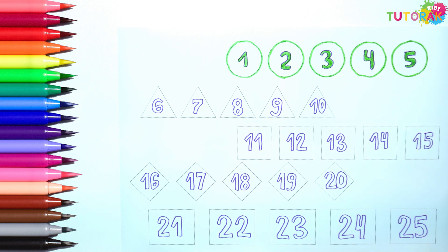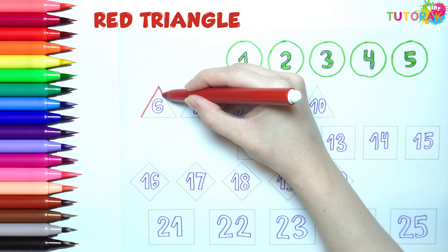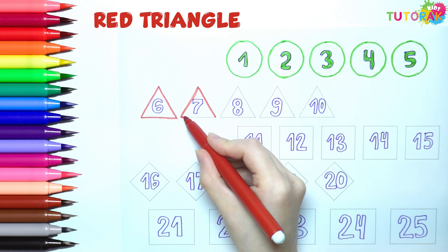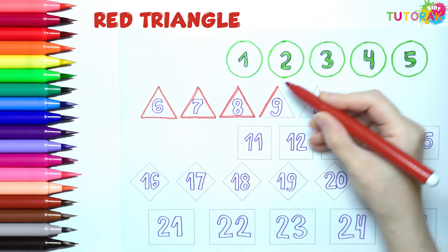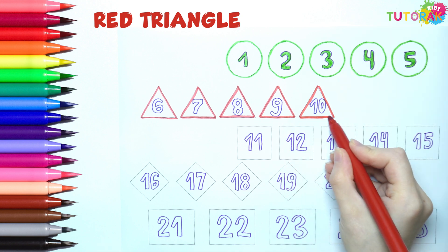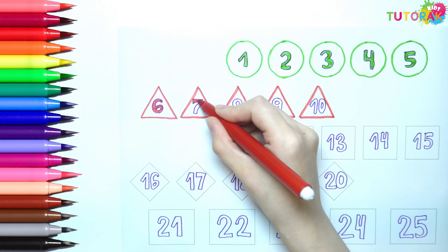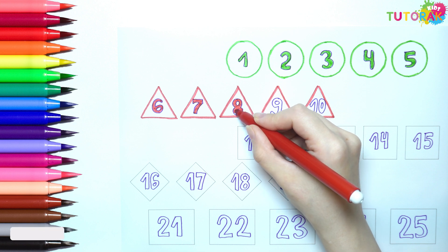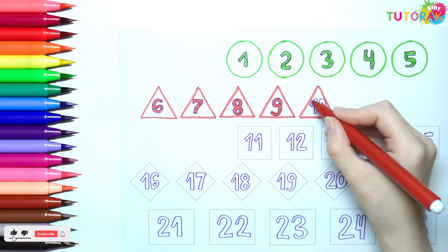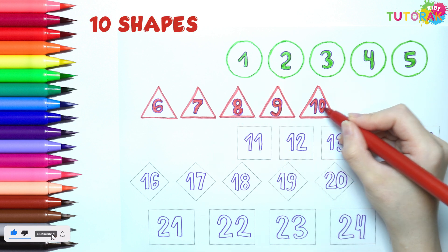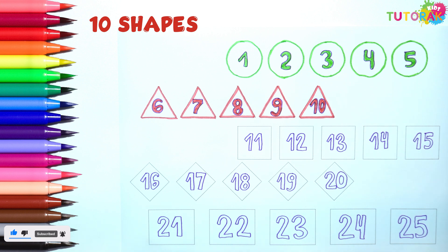The second shape is a triangle. That's 1, 2, 3, 4, 5 triangles. Together we have 10 shapes.